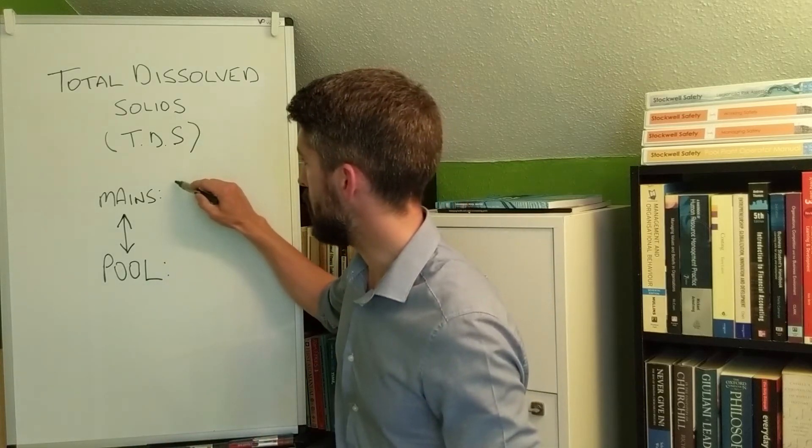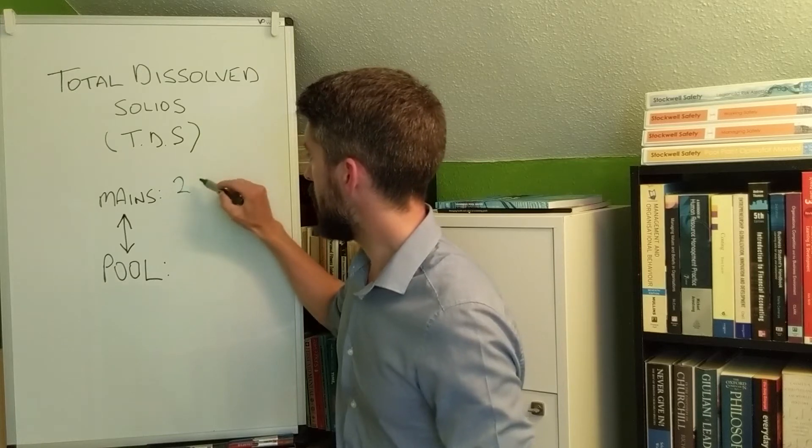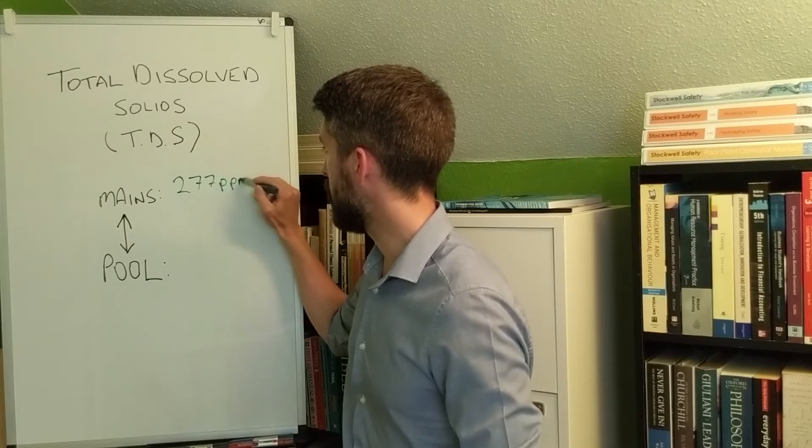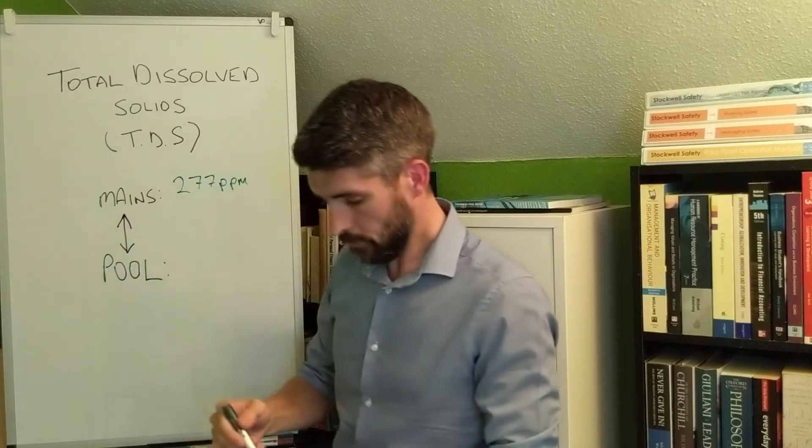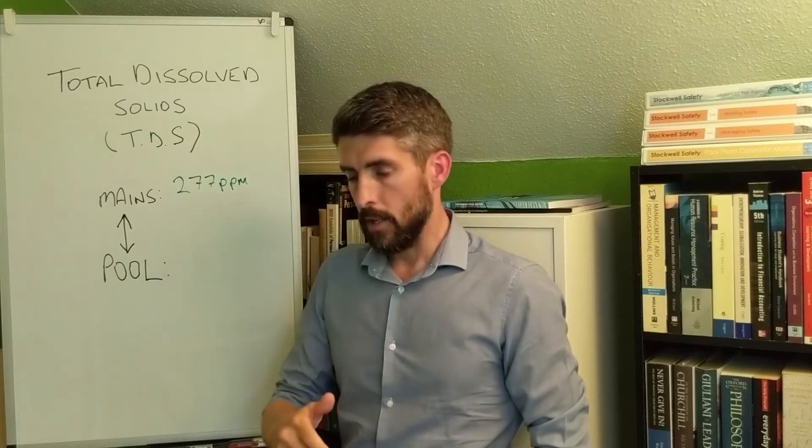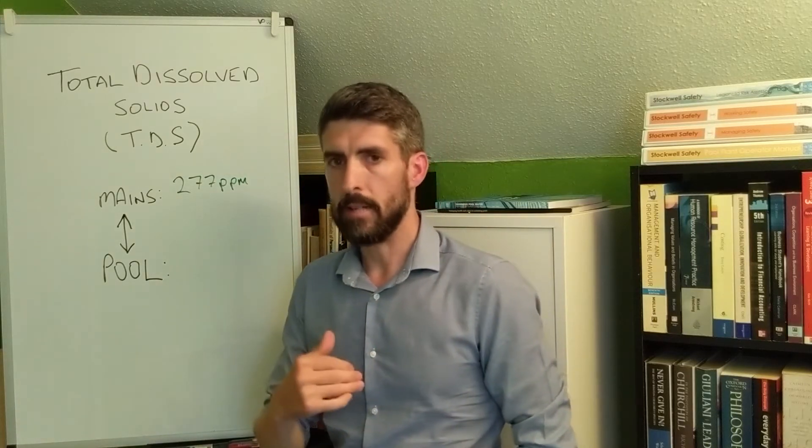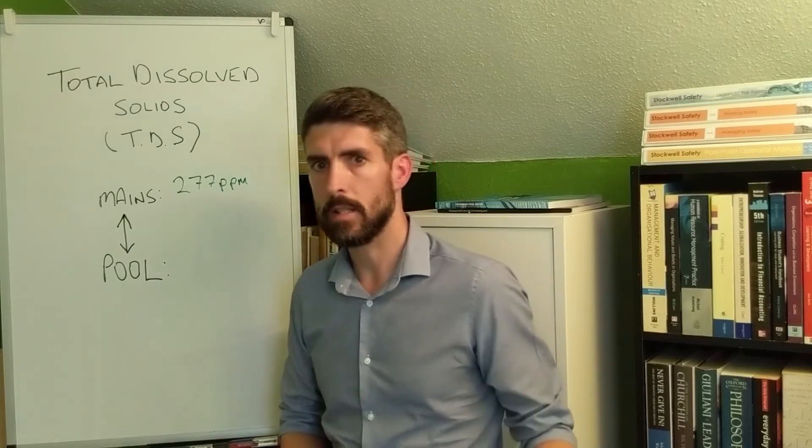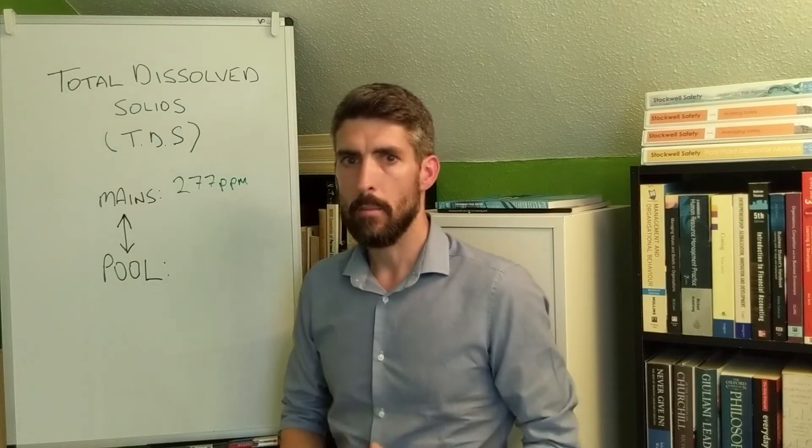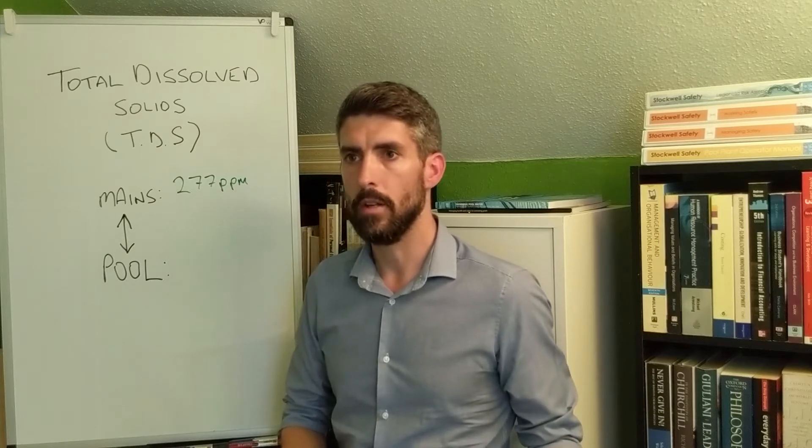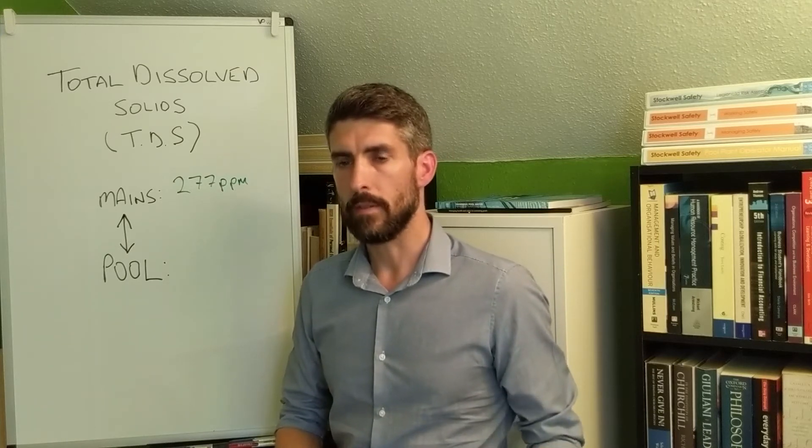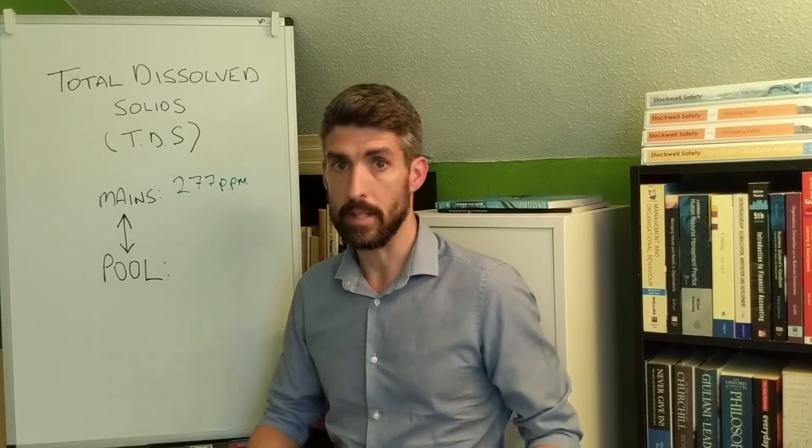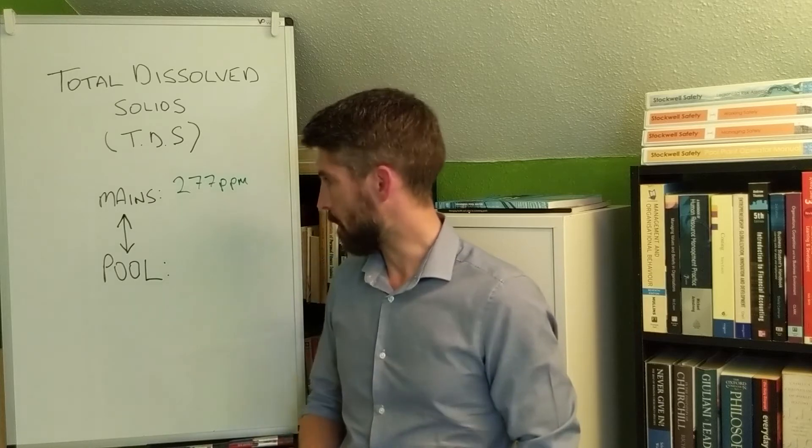So let's say we've got 277 parts per million mains. You need to make sure that you are testing from a mains tap rather than a tank-fed tap. Mains outlets are usually much higher pressure than tank-fed, so that can be a way of getting an idea, or referring to a schematic.